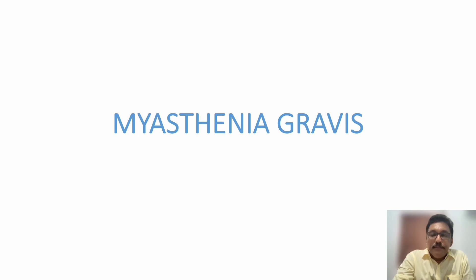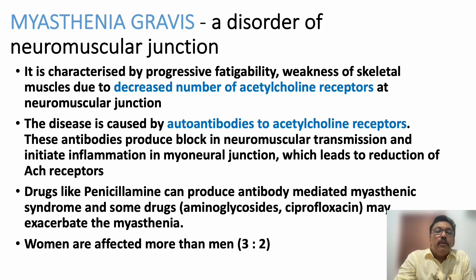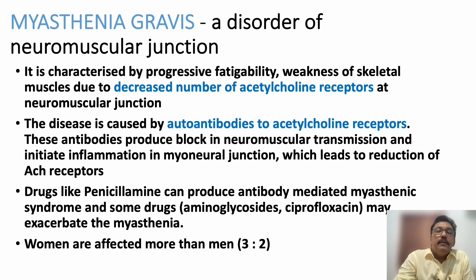Welcome to ATCM, the emergency medicine channel. Today we discuss myasthenia gravis, a disorder of the neuromuscular junction. There will be a decreased number of acetylcholine receptors because antibodies destroy the acetylcholine receptors, resulting in reduced transmission at the neuromuscular junction. It is an immune-mediated disorder.